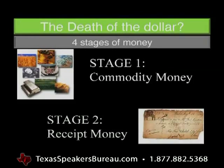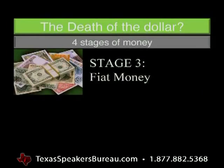Over time, it becomes difficult to lug all this accumulated stuff around, so you find a warehouse to put it in and get a receipt. You can then use these receipts to pay people as the economy progresses. Eventually the government gets involved and moves to what we call fiat money — a currency backed by the full faith and credit of the government.